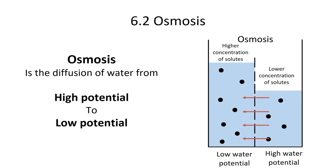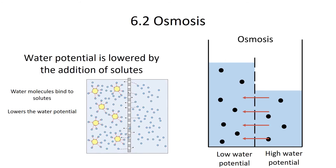How does a solute affect water potential? The more solutes you add to water, the lower the potential. Take salt — as you add salt to water, you're lowering the water potential. As the salt dissolves, the sodium and chloride ions are highly charged and attract water molecules, preventing them from moving around freely. So the potential of the water molecules to move becomes lessened — if you put a drop of water in salt, the salt holds onto it very closely.